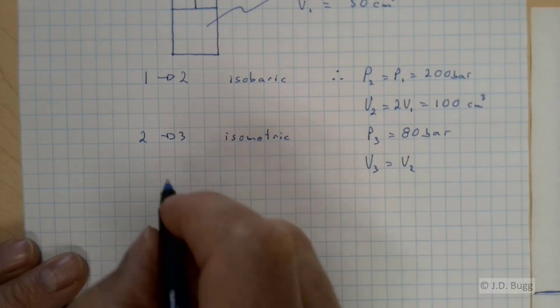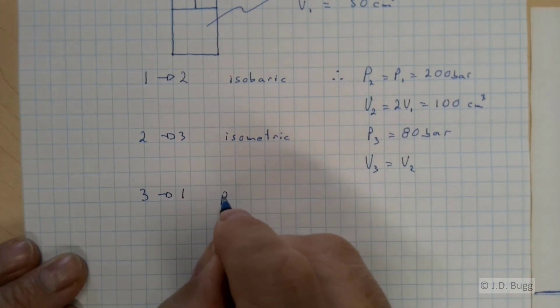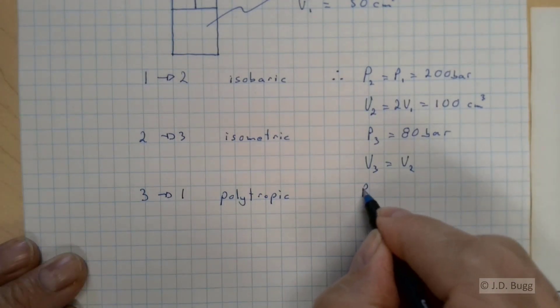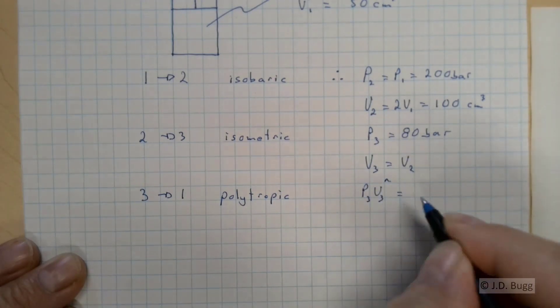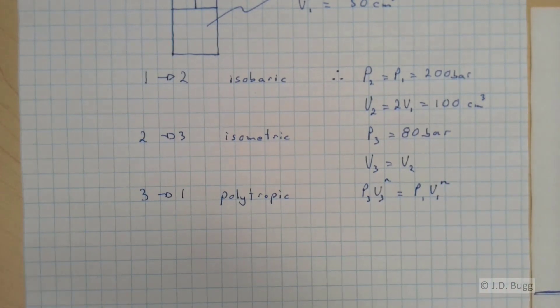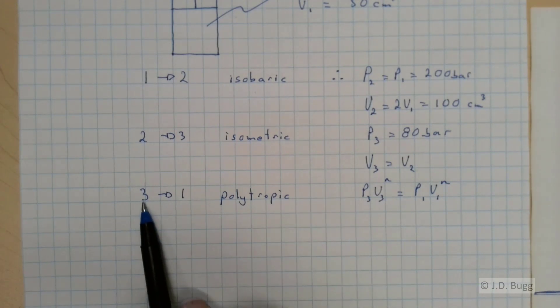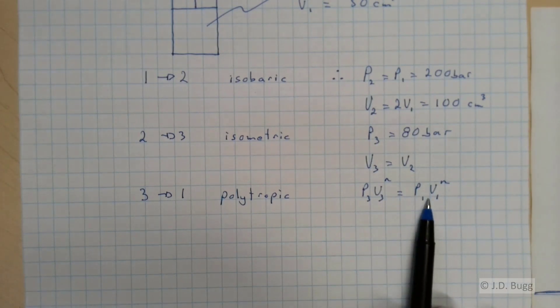Now the final process, 3 to 1, is polytropic. And that means that P3 V3 to the N is equal to P1 V1 to the N. Notice because it's a cycle, the final process takes us from state 3 back to the original state, back to 1. So this polytropic equation is connecting state 3 and state 1.